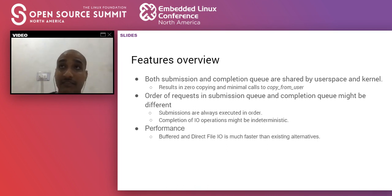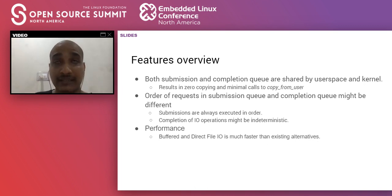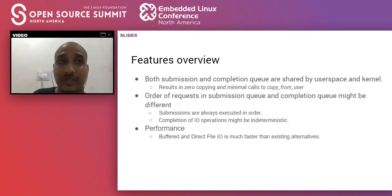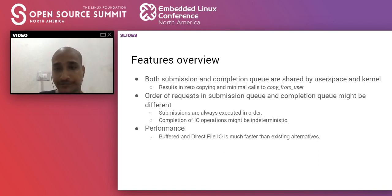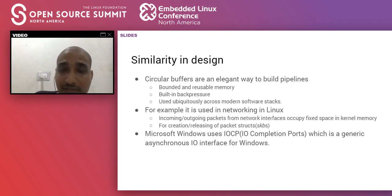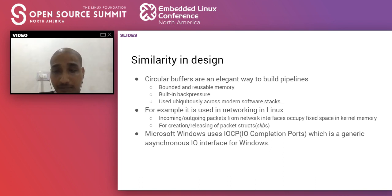Because IO operations are unpredictable, we cannot guarantee the order of submission and completion requests. If submission requests are issued in order, the completion events for those requests might not be in order because they are asynchronous. Depending on which IO operations complete first, we get the corresponding completion queue events.